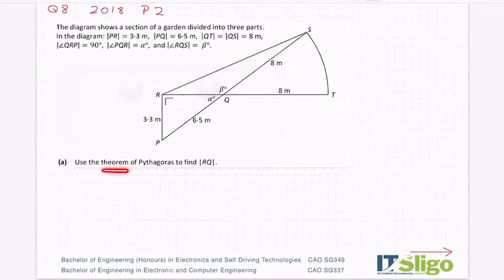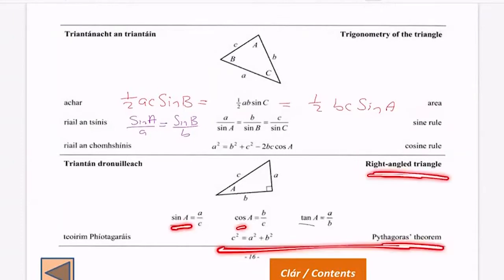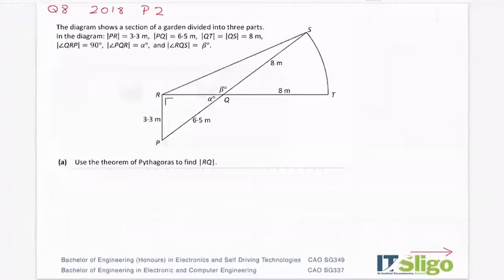Now you don't get a choice in this one because they said use the theorem of Pythagoras. Pythagoras' theorem only works on right angled triangles, same as sin cos tan. This is a non-right angled triangle, so I can't use that one. I am being forced to use the triangle down the bottom so that I can use Pythagoras' theorem.